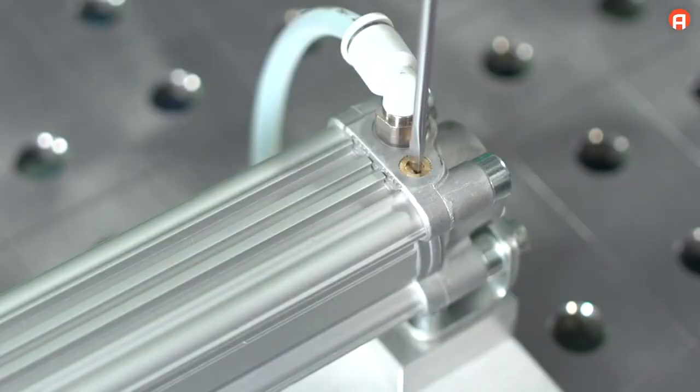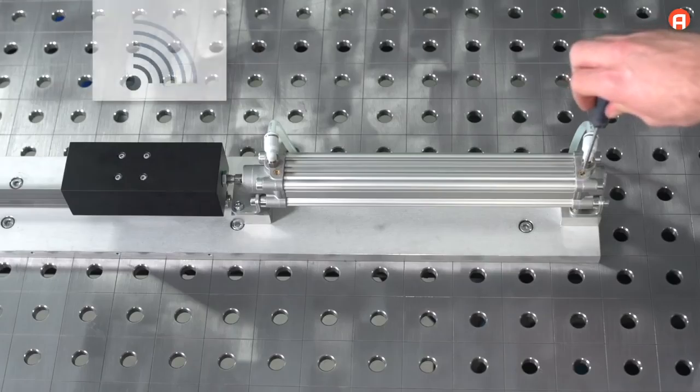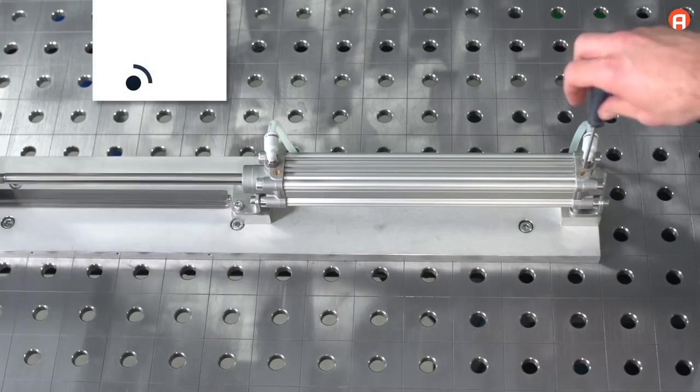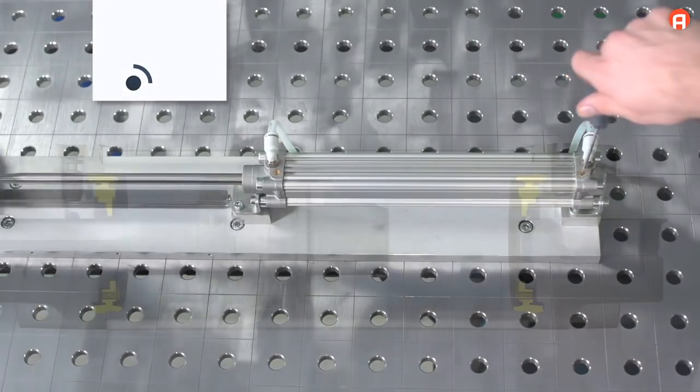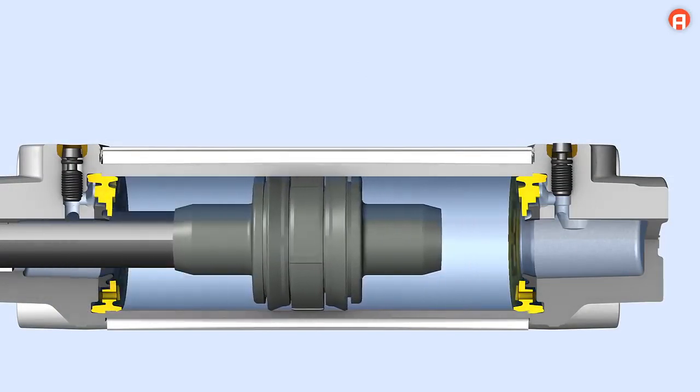Continue to slowly loosen the throttling screw. The cylinder will now get quieter until the noise is barely perceptible. The piston will gently move into the end position.